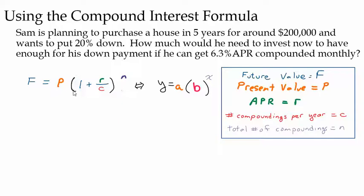Let's look at this example. Sam is planning to purchase a house in five years for around $200,000, and he wants to put 20% down. How much would he need to invest now to have enough for his down payment if he can get 6.3% APR compounded monthly? So in this problem, we are trying to figure out how much he would have to invest now.